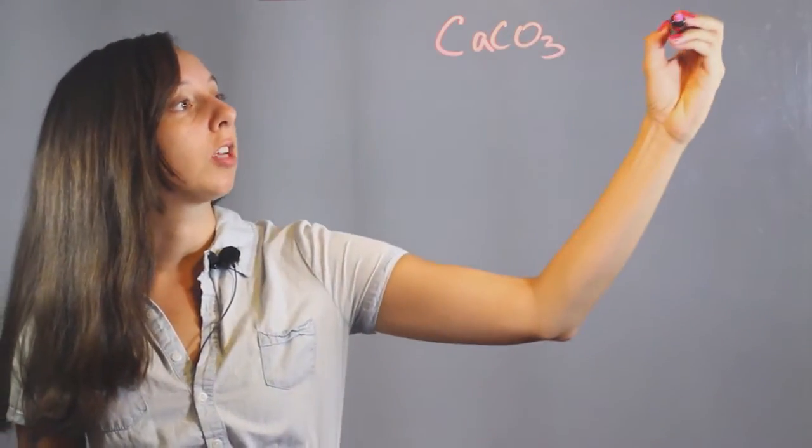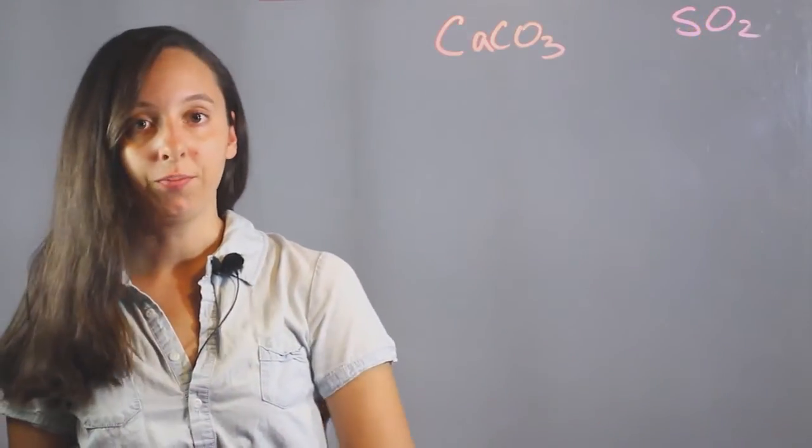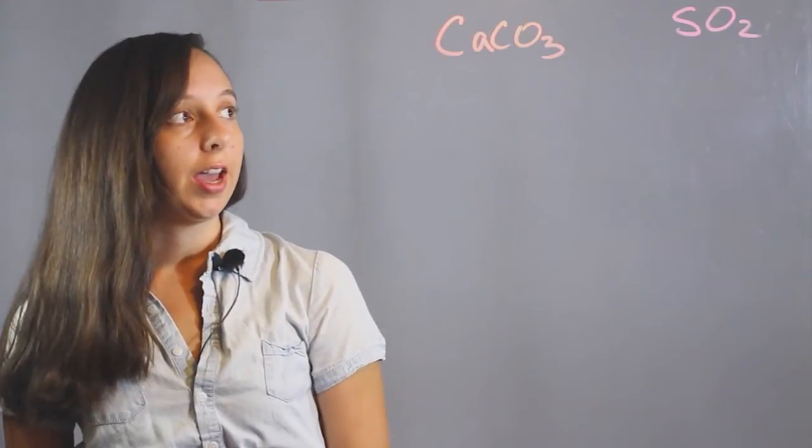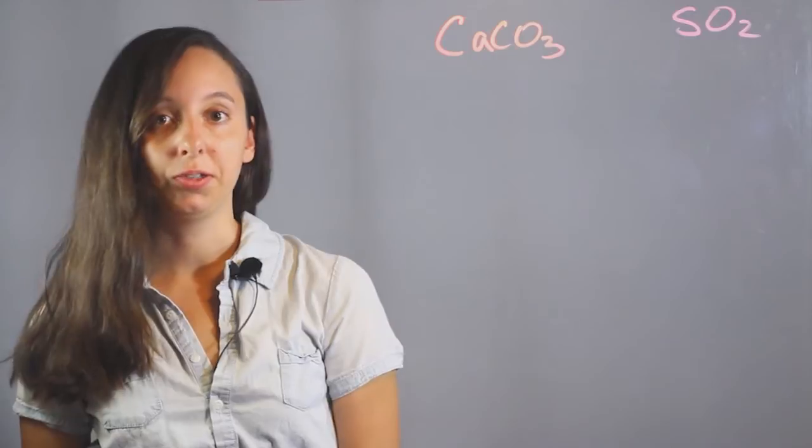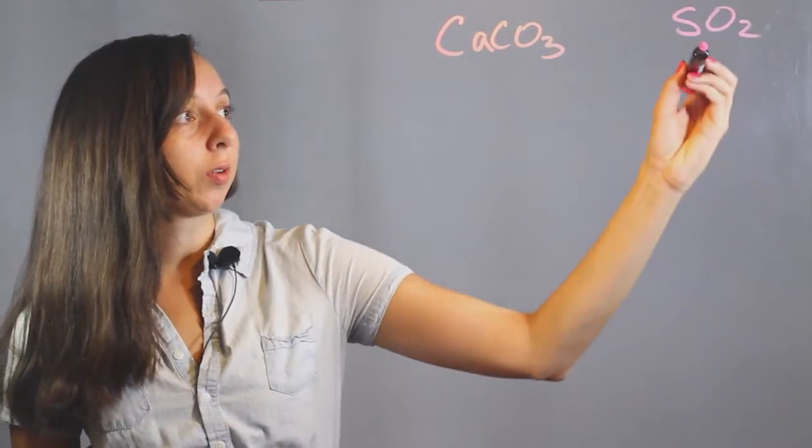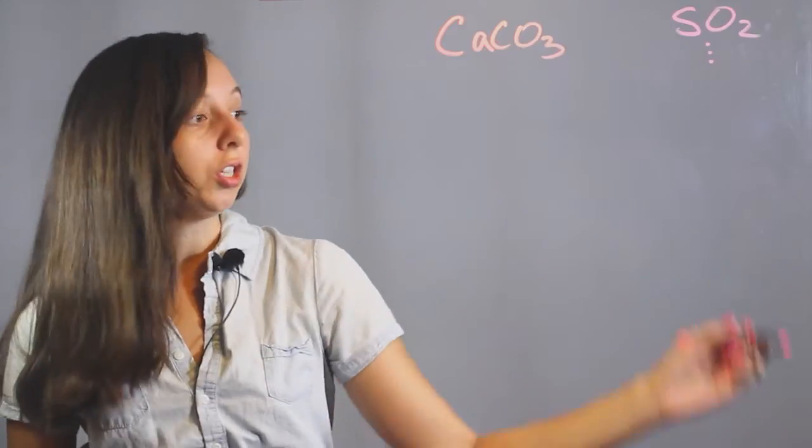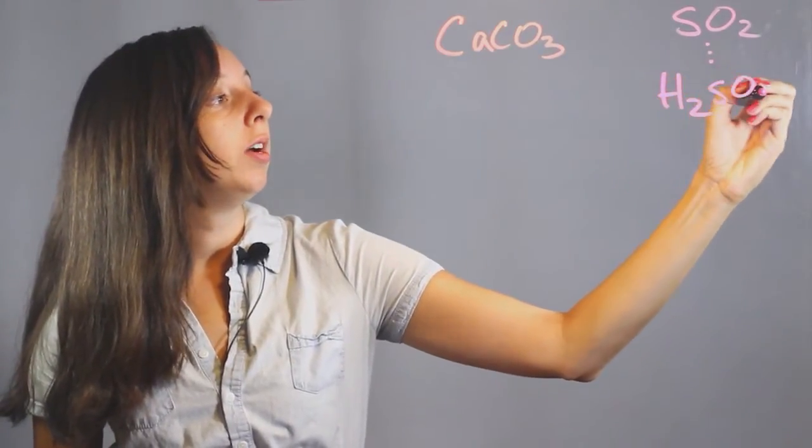Sulfur dioxide we represent as SO2. Naturally, SO2 shouldn't be showing up that much, but it's actually a toxin that we use. It gets released from plants or various factories and turns into sulfuric acid, represented as H2SO4.